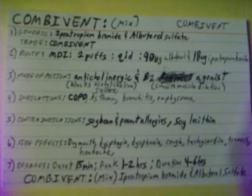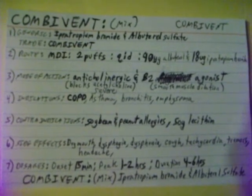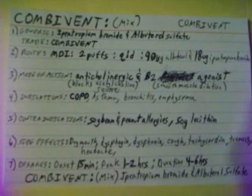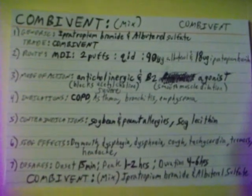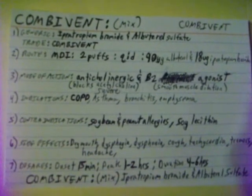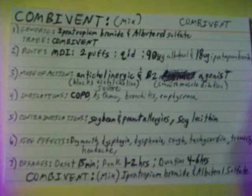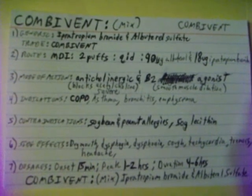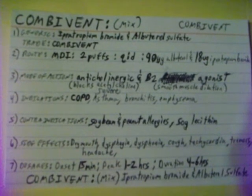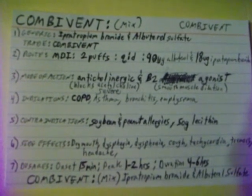Mode of action of Combivent is an anticholinergic, which blocks acetylcholine, and a B2 agonist, which causes smooth muscle dilation of breathing muscles.